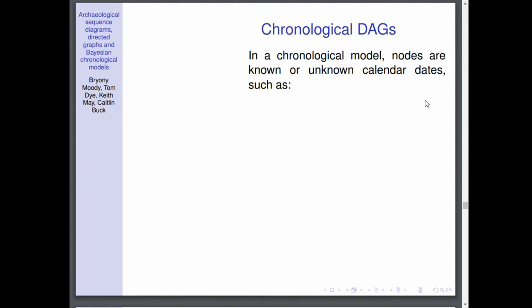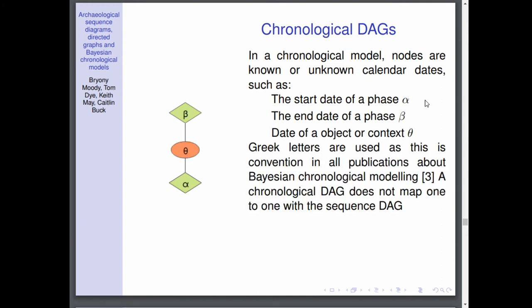So this leads us on to our next stage in the process, the chronological DAG. In a chronological model, the nodes now represent known or unknown calendar dates that we want to estimate. An example of this is the start of a phase α, the end of a phase β, and a date of an object or a context θ. These Greek letters haven't just appeared out of nowhere, they are convention in all the publications about Bayesian chronological modelling. Just to note that the chronological DAG does not map one-to-one with the sequence DAG. We're including information and taking it away, as mentioned earlier.